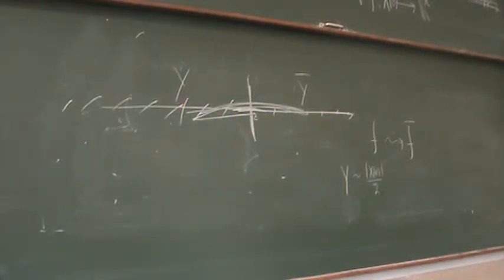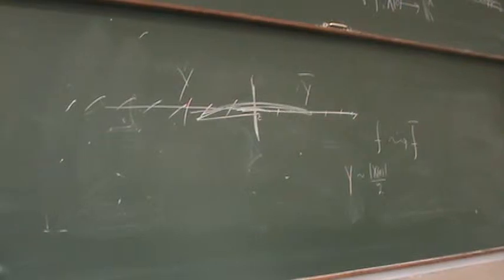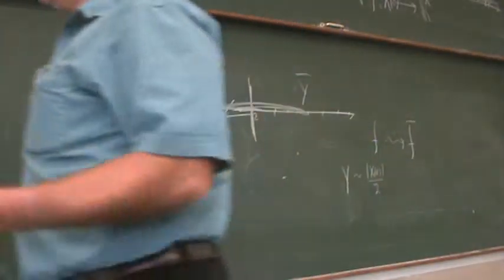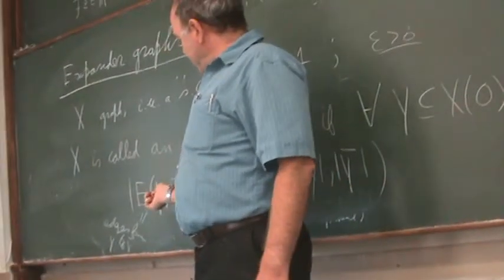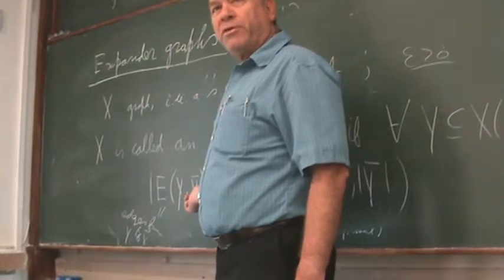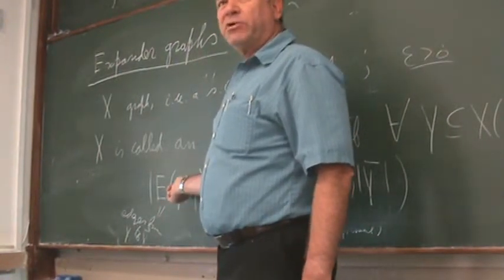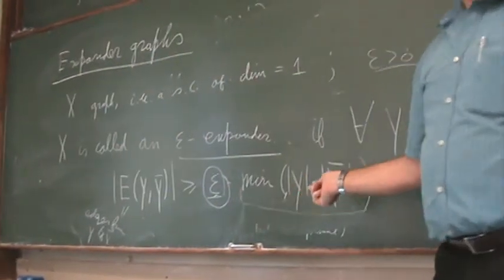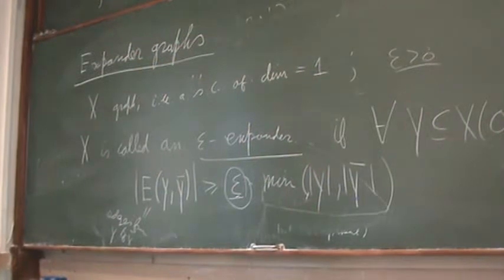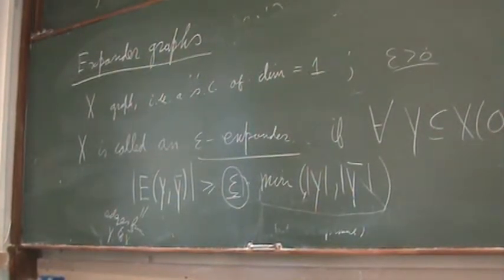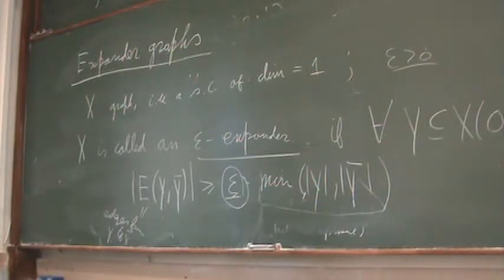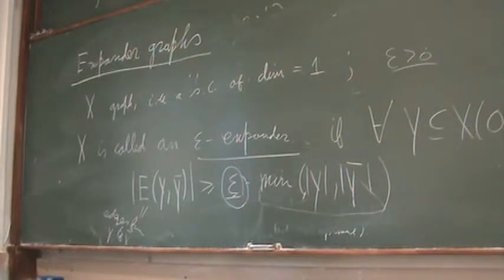For example, if a graph is an epsilon expander, then it must be connected. Because if it's not connected, take one of the connected components — there is no edge between that component and the other. So this side is zero while the other side is not. So if a graph is an expander, it must be connected. In some sense, an expander is a graph which is very, very connected.